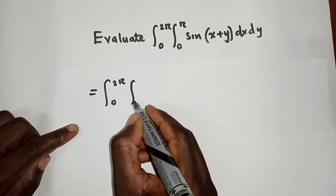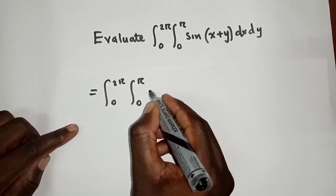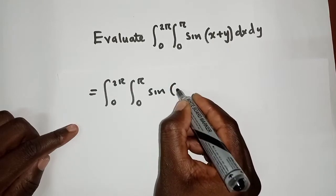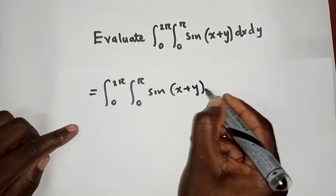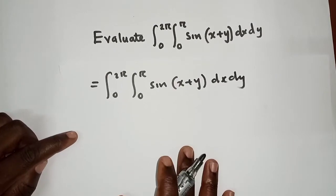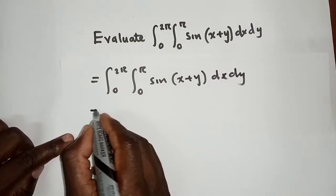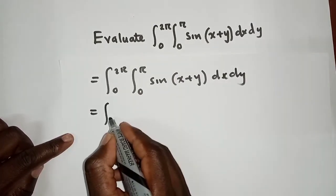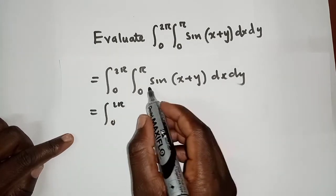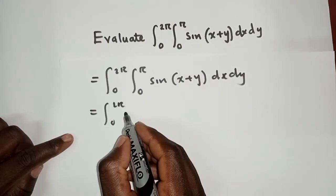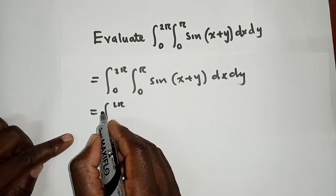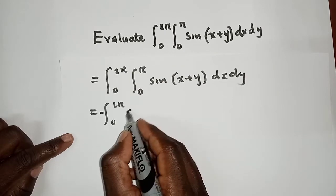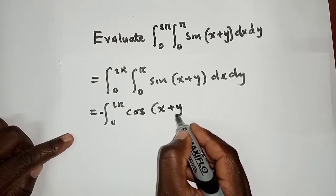This is what we have: we have dx dy right here. Now when we integrate, mind you we are integrating with respect to x first. So this will be negative, and we can bring it outside: negative cosine of (x+y), and we put the limits - upper limit is pi, lower limit is zero - then we have dy here.